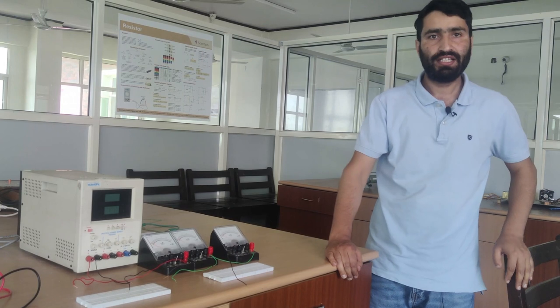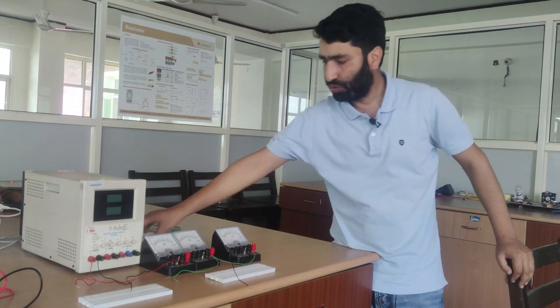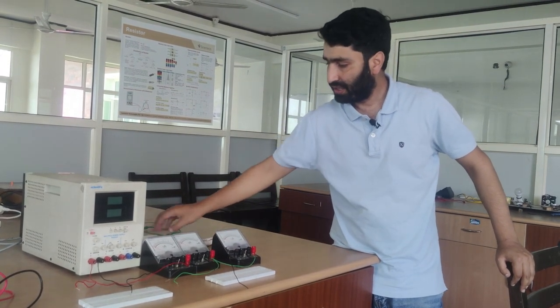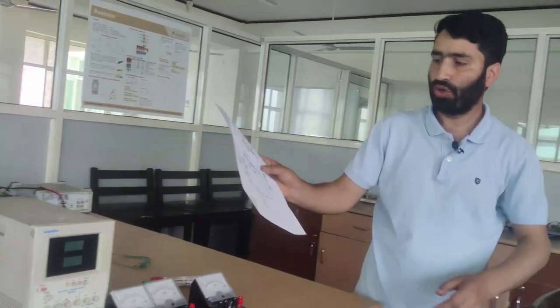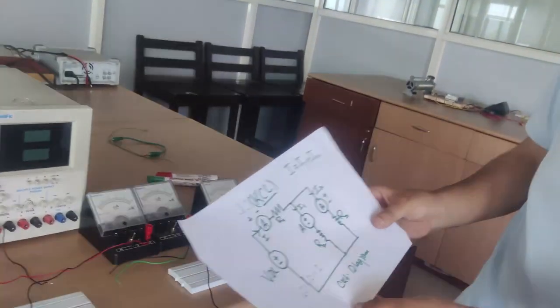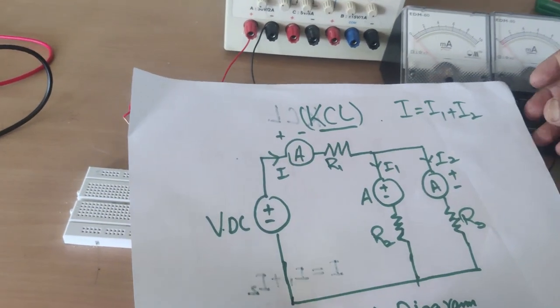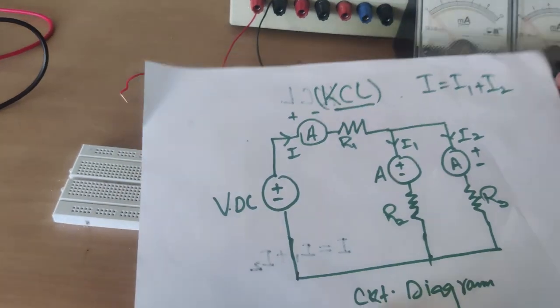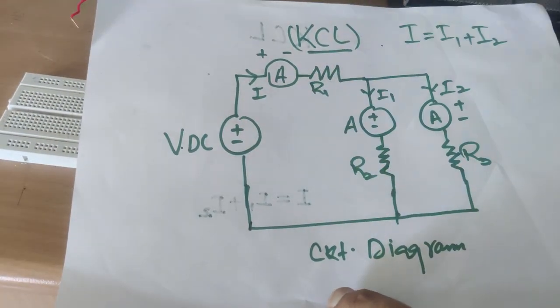First of all, we should know what kind of circuit we are going to design. You can draw any circuit you want. I have drawn a circuit as an example, which you can see here. We are going to first demonstrate Kirchhoff's Current Law.